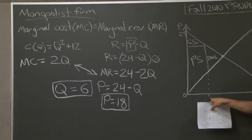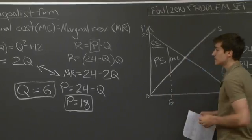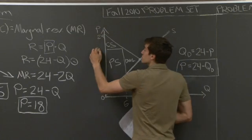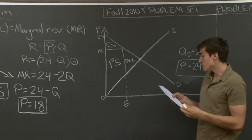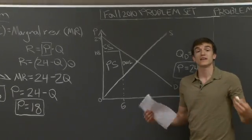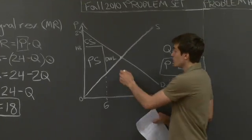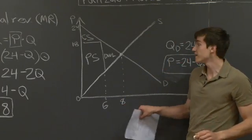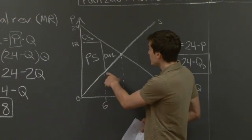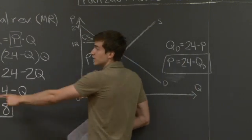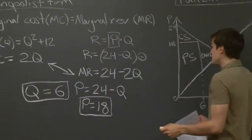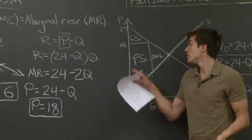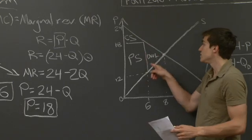Coming back to our graph, we know the monopolist level of output is 6, so we label that point. The price charged is not at the intersection with the supply curve — it's at the intersection with the demand curve at 18. We also label two more useful points: the equilibrium quantity of 8, and the marginal cost curve value when quantity is 6, which gives an intersection at 12. These labels make calculating consumer surplus, producer surplus, and deadweight loss easier.